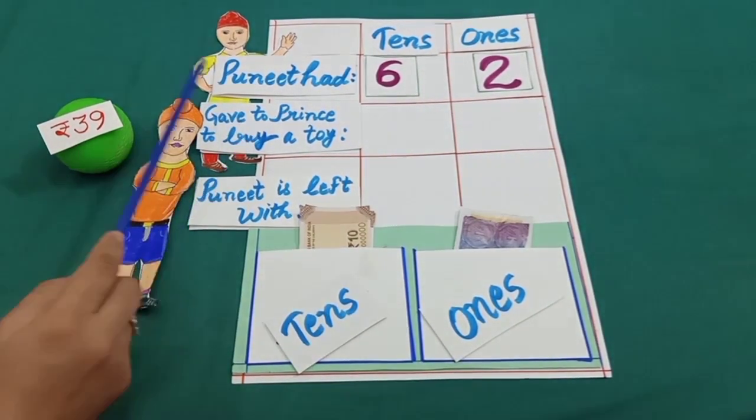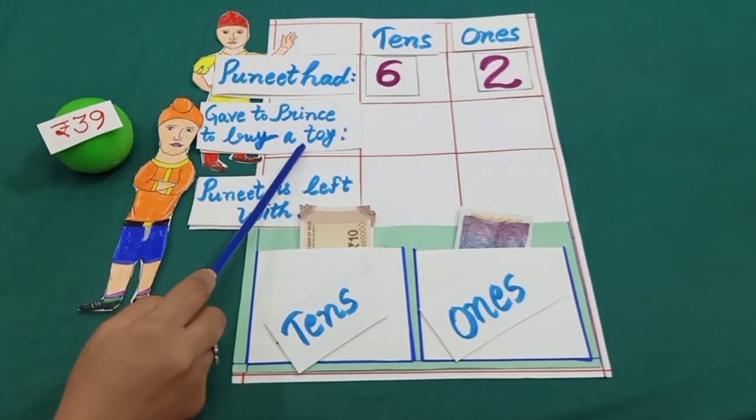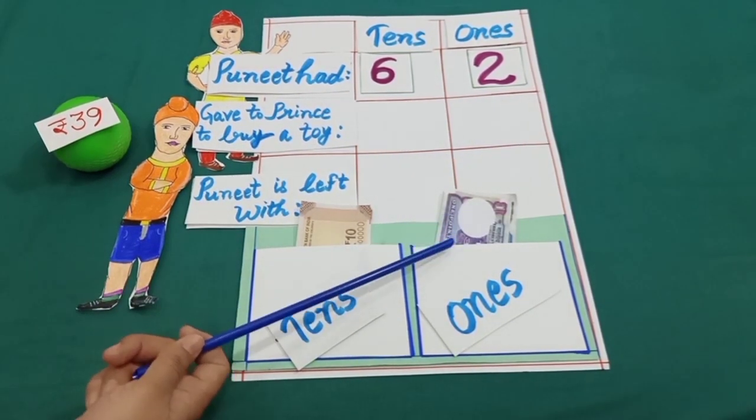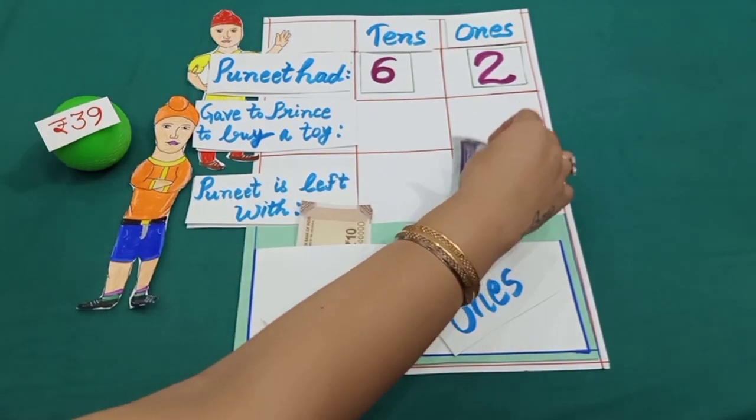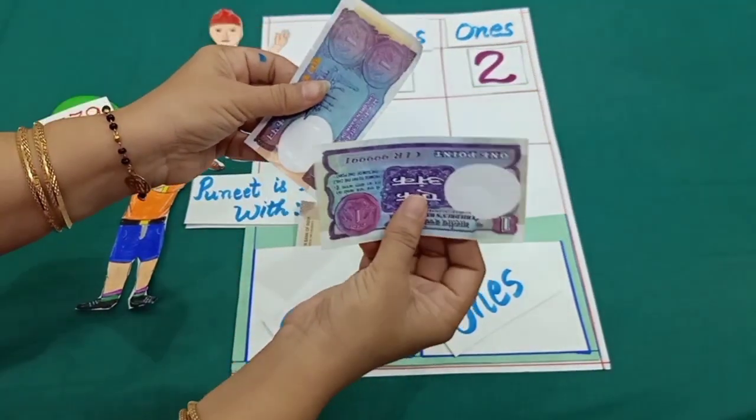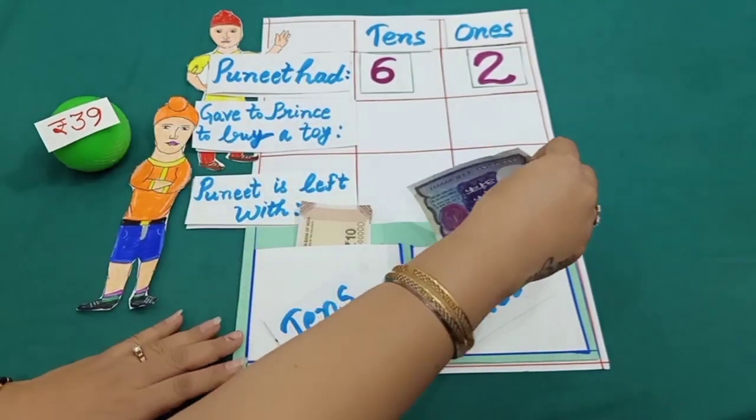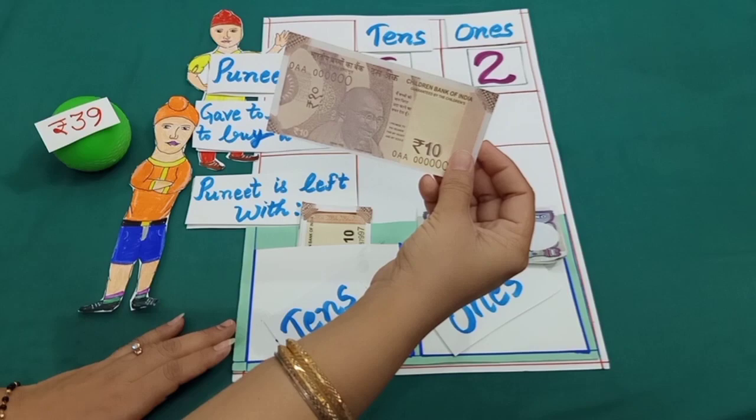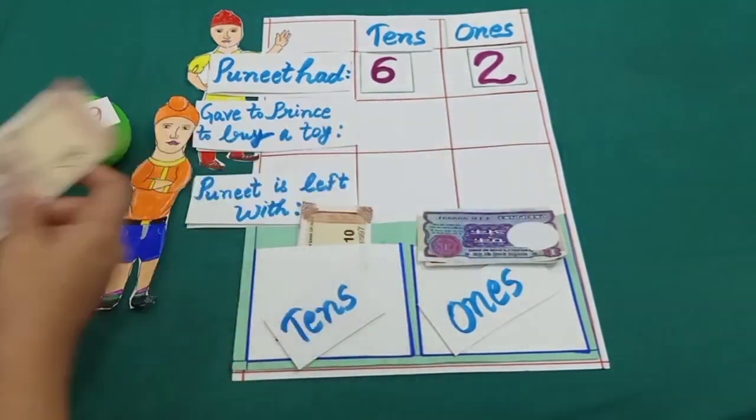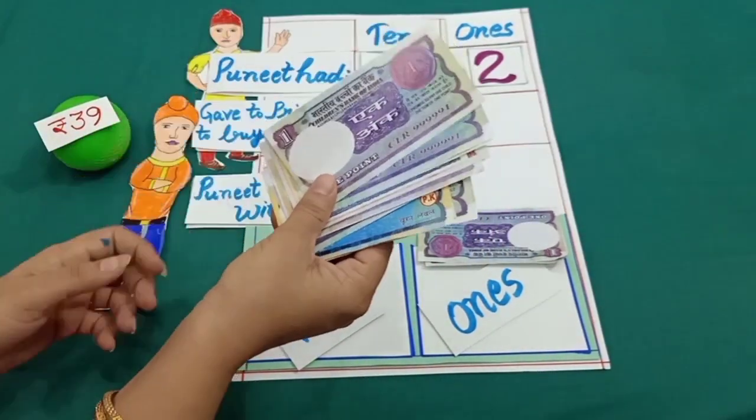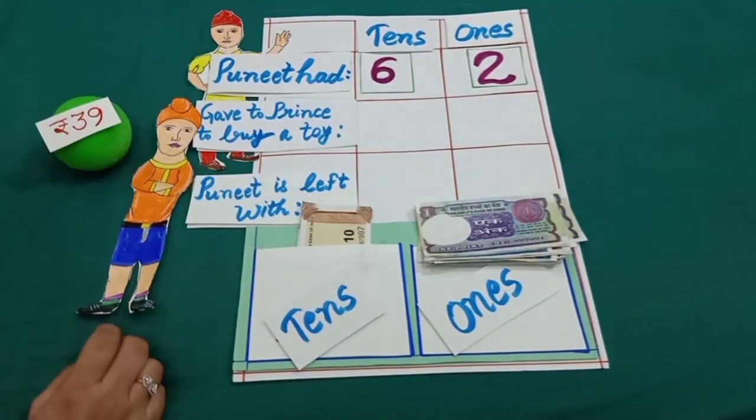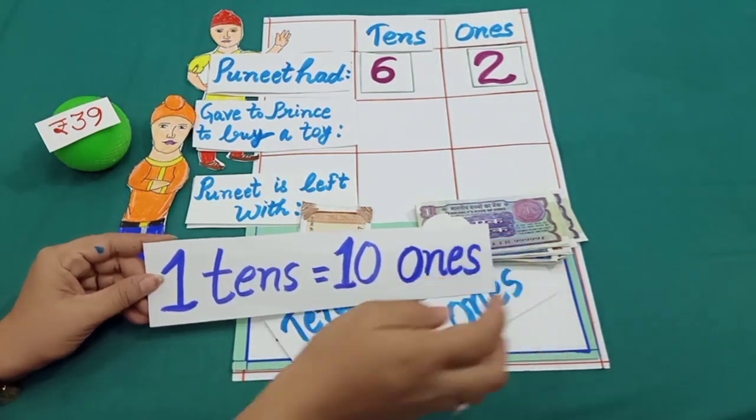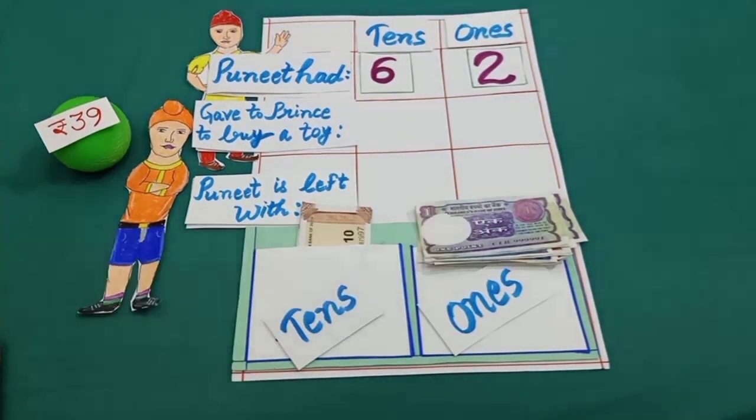Puneet gave 39 rupees to Prince to buy a toy. He firstly counted his 1 rupee notes and he was only having 2 notes of rupees 1. So he picked 1 ten rupee note to convert it into 10 one rupee notes. Because, dear students, you know 1 ten is equal to 10 ones.